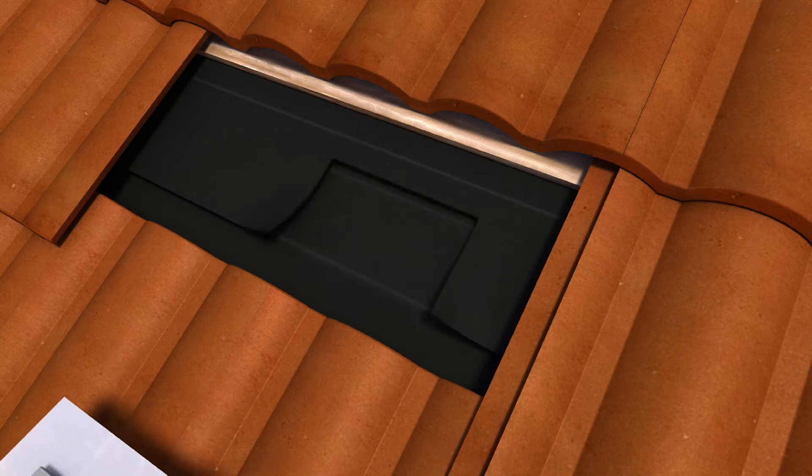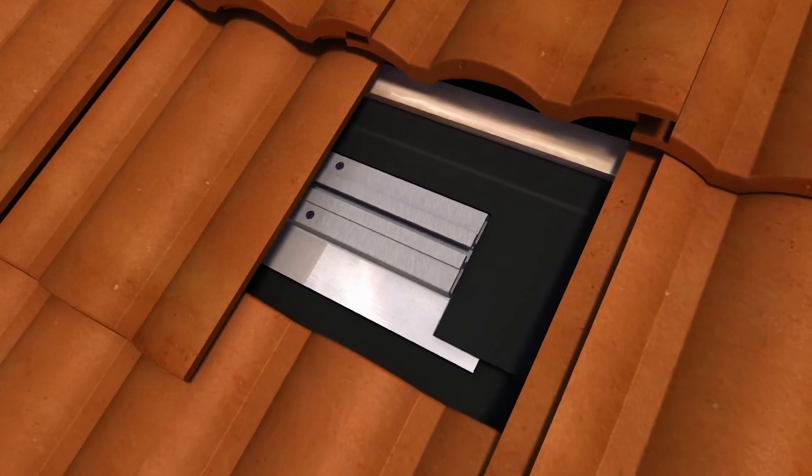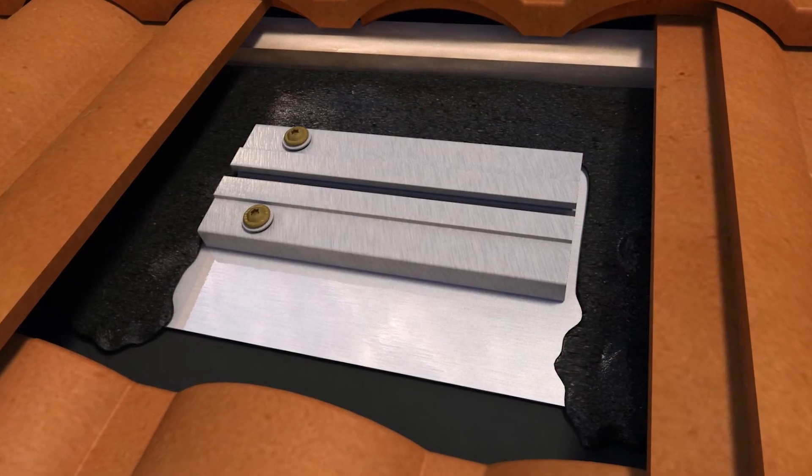Built-in sub-flashing is designed to make code-compliant waterproofing easy. We recommend using either the lapped felt paper or three-course tar method to waterproof the flashing.